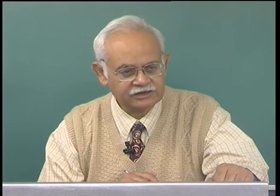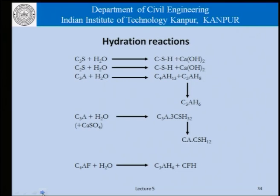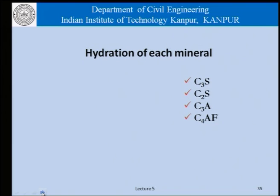These are reactions which we have already studied. We should note the extent of CSH and CH which are formed. There are other hydration products formed when calcium aluminates — tricalcium aluminate and tetracalcium aluminoferrite — react to give tricalcium aluminate hydration products. Now we will take a closer look at the hydration of each of the constituent minerals. Cement comprises of these four principal solid complexes and we will examine the hydration of each.